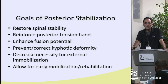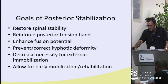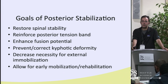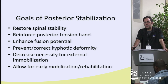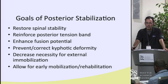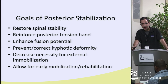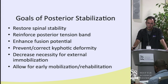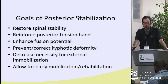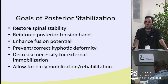Goals of posterior stabilization include restoring spinal stability, reinforcing the posterior tension band, and preventing or correcting posterior deformity. This is only appropriate if flexion-extension films show the patient can achieve lordosis with extension. If lordosis can be achieved with extension, a posterior approach is potentially viable.